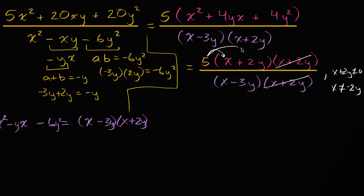And so what you're left with, and we can redistribute this five, if we want to write it out in expanded form, we could rewrite it as, the numerator would be five x, let me write it over here, five x plus ten y, and the denominator is x minus three y.